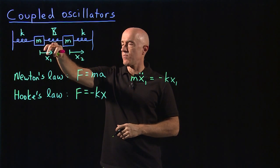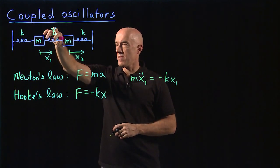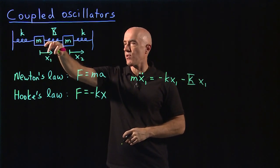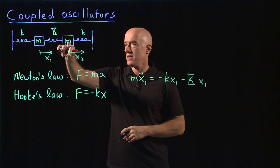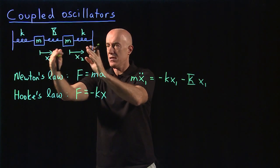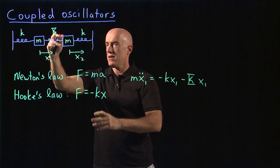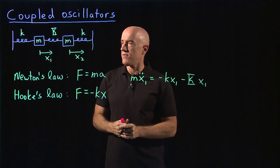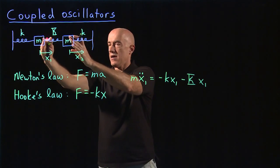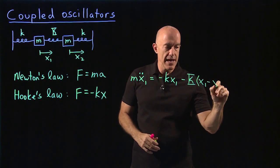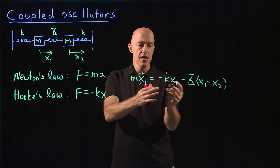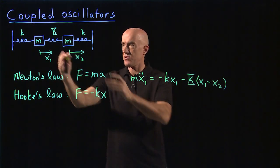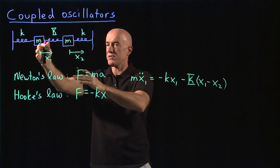The force due to the second spring is also Hooke's law minus capital Kx1. Except the complication is that that spring is also connected to the second mass. So if x1 and x2 were equal, so these two masses move the same amount to the right, the middle spring would not change its length. And the net force due to the extension or compression of the spring on that mass would still be zero. So that means we need to take into account minus x2 here. So then the force due to the middle spring is this minus capital K(x1 minus x2), taking into account that the middle spring is connected to both the first mass and the second mass.